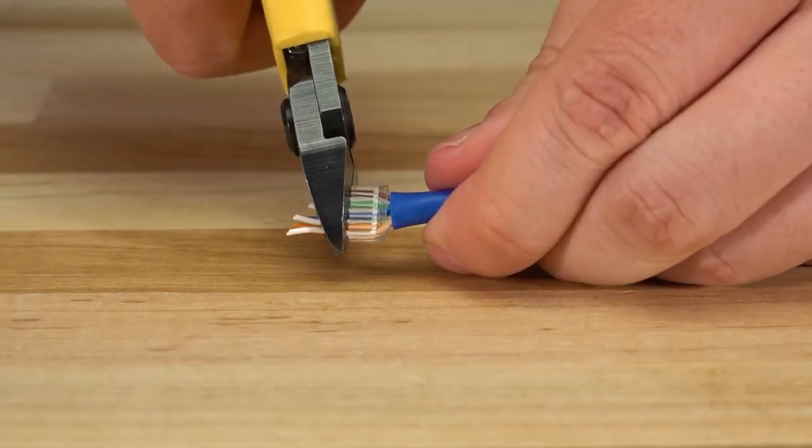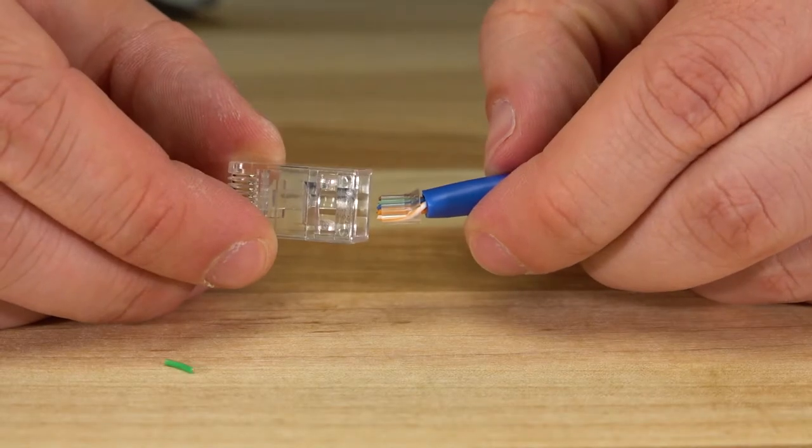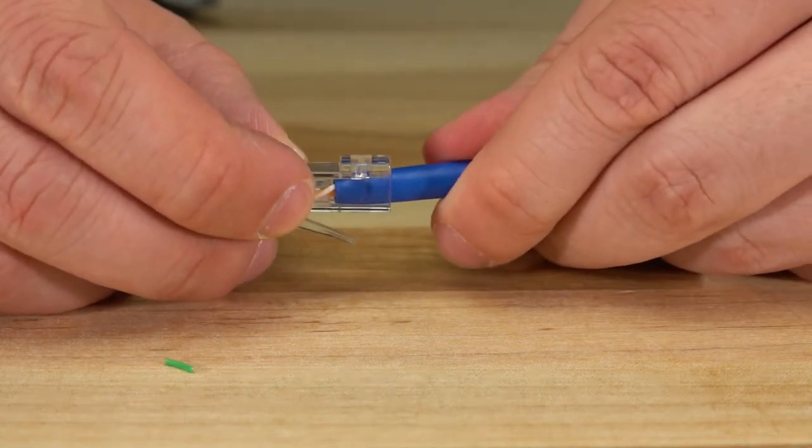Once fully inserted, trim any excess wire from the end of the load bar. Next we'll insert the load bar into the connector to seat it properly.